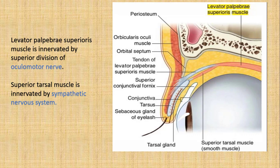We also have two important muscles shown in this picture. The levator palpebrae superioris muscle, which elevates the upper eyelid, is innervated by the superior division of the oculomotor nerve. The superior tarsal muscle is innervated by the sympathetic nervous system, which originates from the superior cervical ganglia.